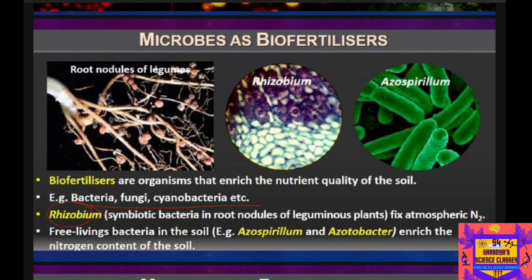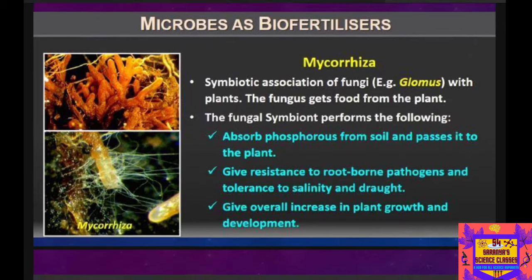We have already learned about Rhizobium — a symbiotic bacterium present in the root nodules of legume plants. It has the capacity to fix atmospheric nitrogen and provide it to the plant. There are also free-living bacteria such as Azospirillum and Acetobacter that have the same capacity to fix atmospheric nitrogen, though Rhizobium is symbiotic.